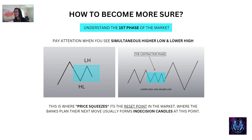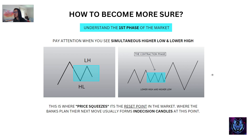This is the secret pattern I want to reveal — this is going to change the way you look at the graphs and change the way you trade. You want to pay close attention to when you see simultaneous higher lows and lower highs. Price moves like this — this is the higher low, this is the lower high. This is called a contraction phase — it is when price starts squeezing. This lets you know that the market is moving into the first phase. Price consolidates and you see this squeeze into a contraction box, which is the reset point in the market where the banks plan their next move and usually form indecision candles.